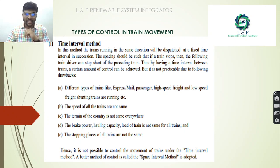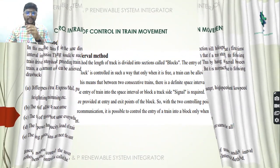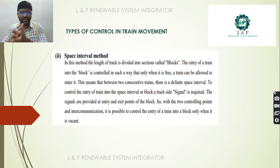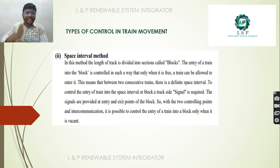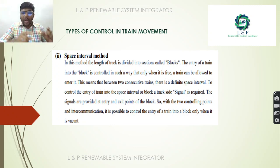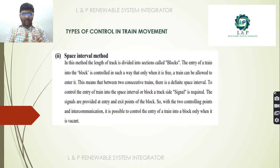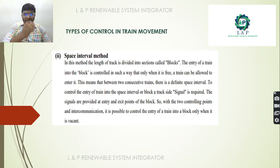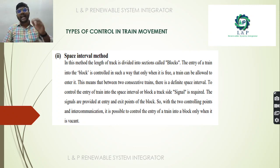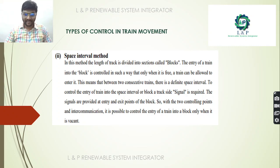The advancement over the Time Interval Method is the Space Interval Method. In this method, the entire length of the track is considered and divided into blocks. The entry of a train into one block is controlled such that it is allowed to enter only when the preceding block is free. Signals are used wherever required to implement this control.